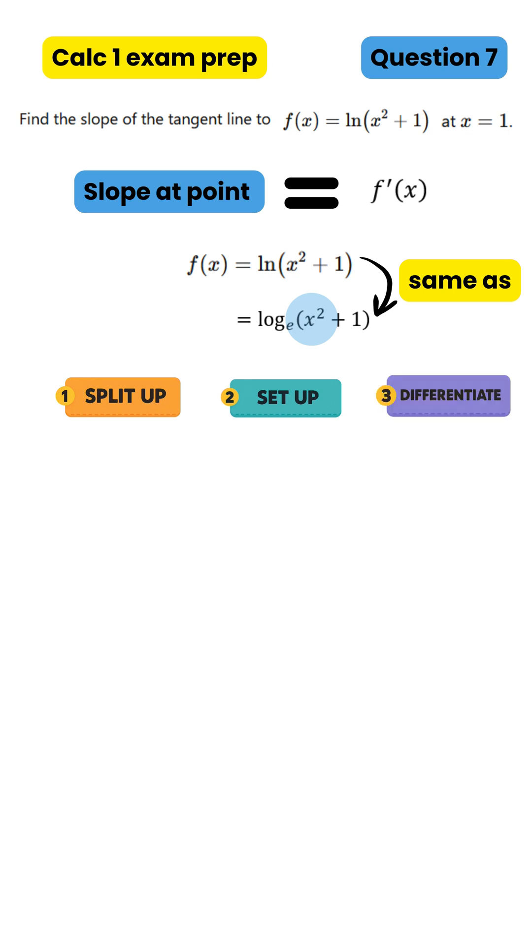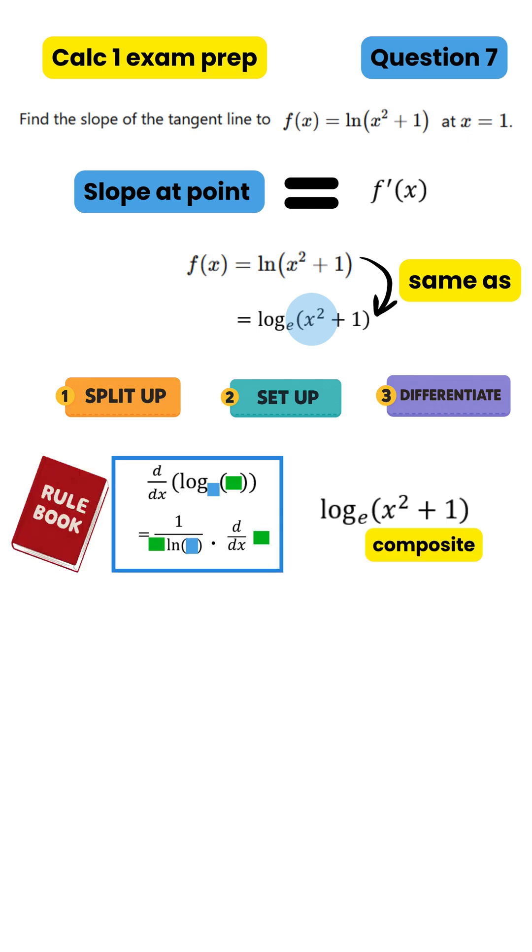Step 3, differentiate. Decide whether the function is simple or composite, because we handle them differently. If the log's input is just x, it's simple. If anything other than a plain x appears in the input, it's composite, and we must use the chain rule.